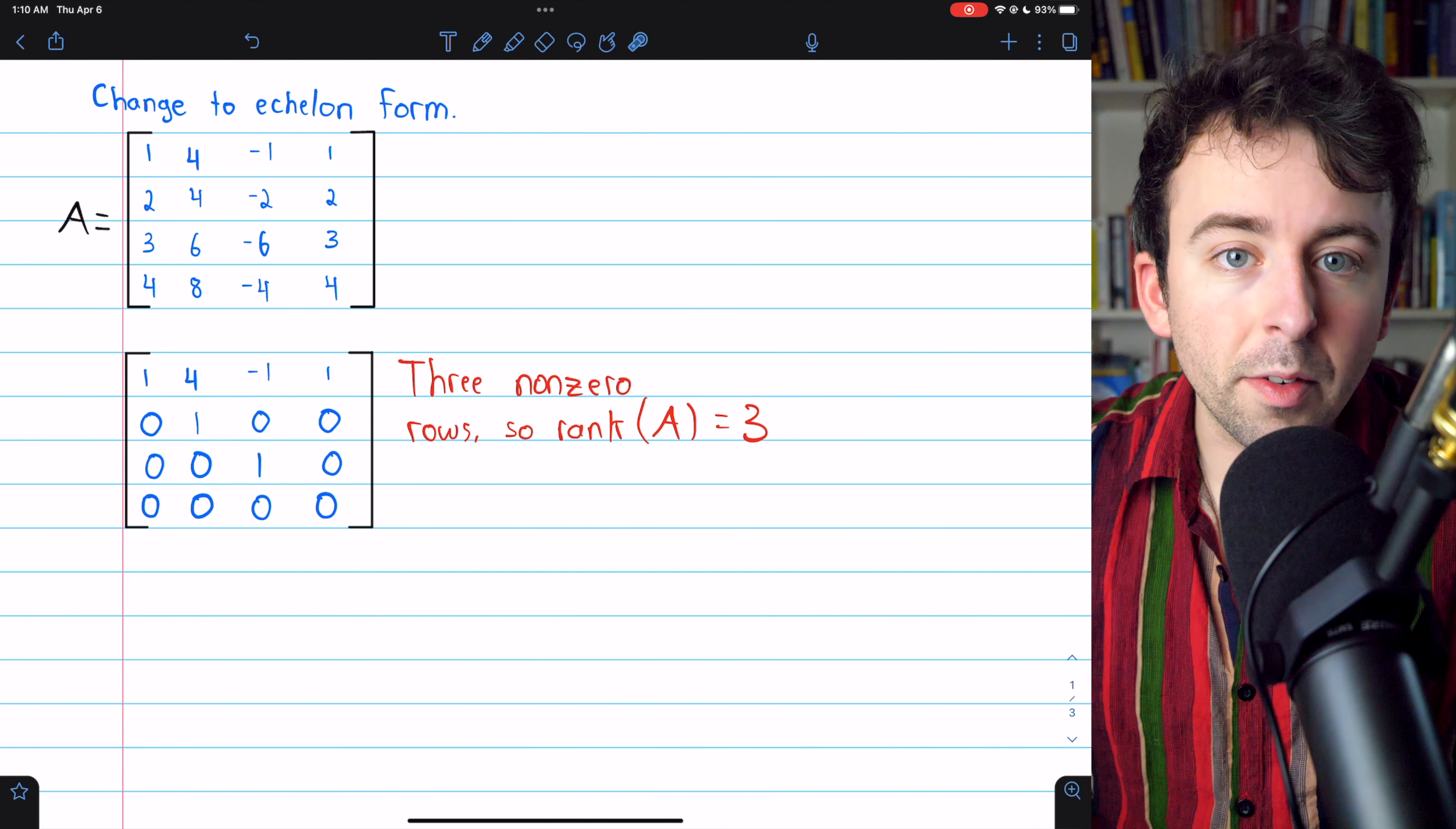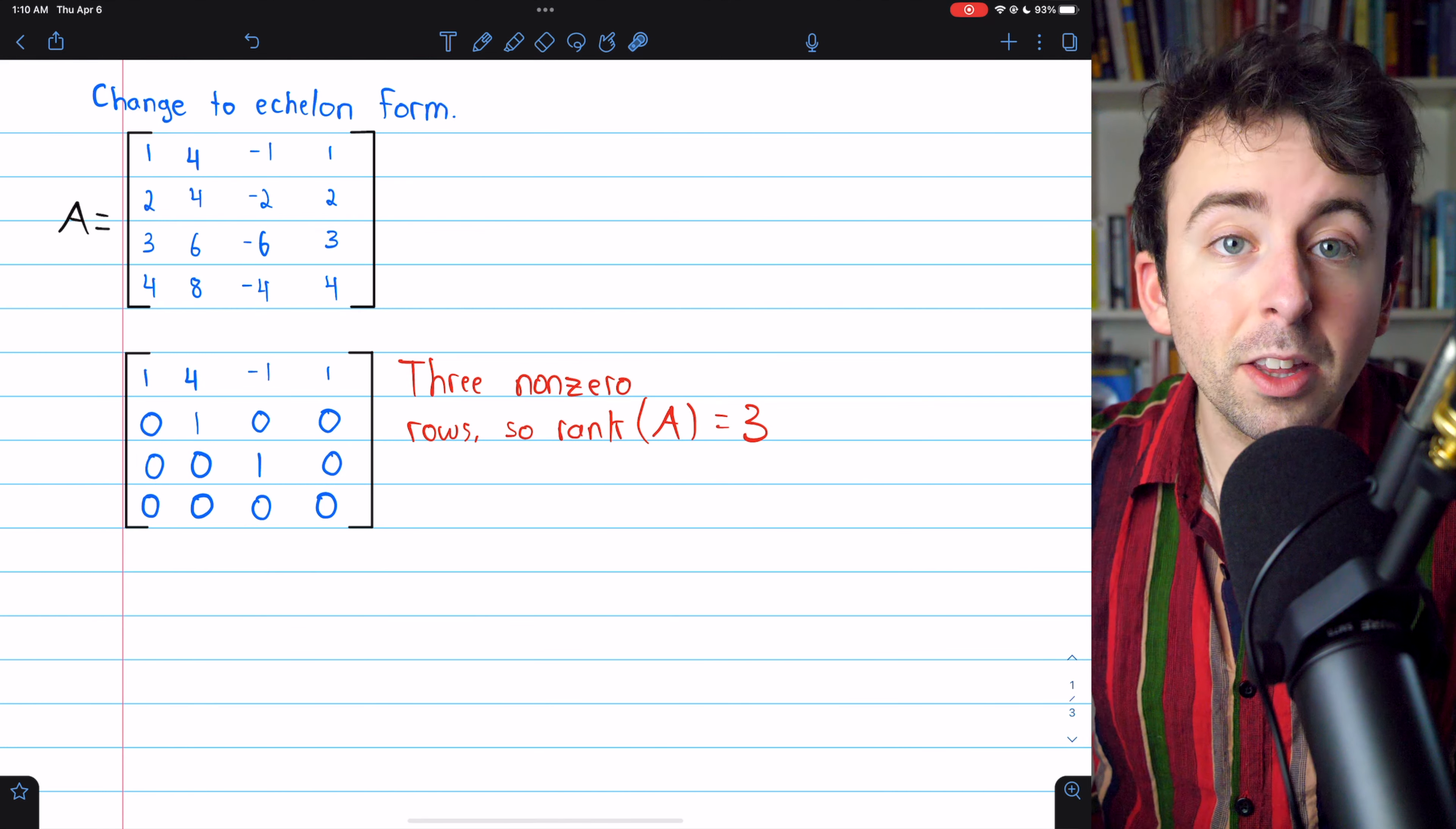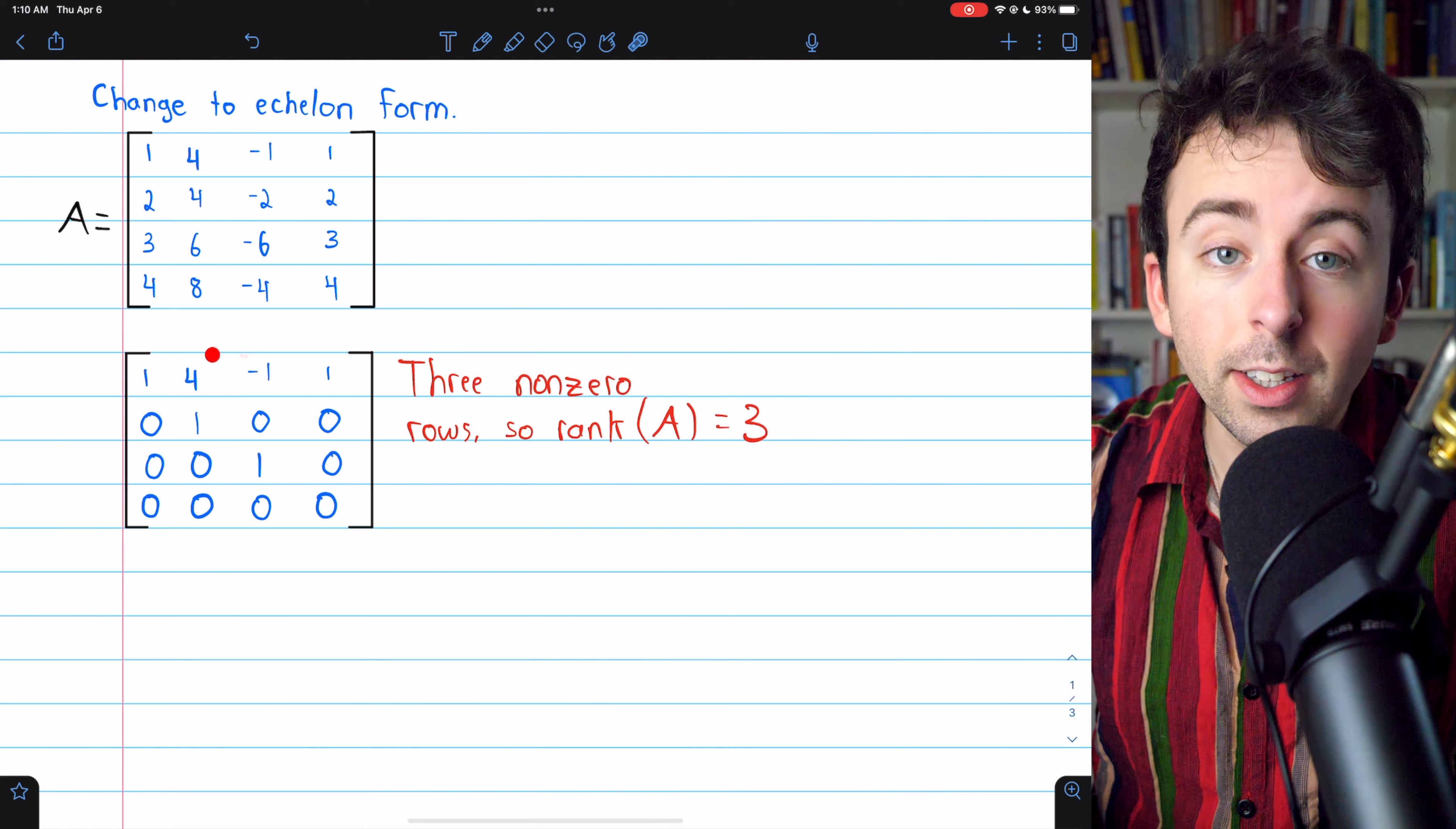So this might be enough for you. How do you find the rank of a 4 by 4 matrix? Well, perform elementary row operations to get it in row echelon form, and the number of non-zero rows is the rank of the matrix. If you want a little more detail, let's spend a couple minutes going through those row operations that get us from here to here.